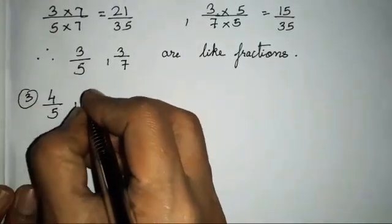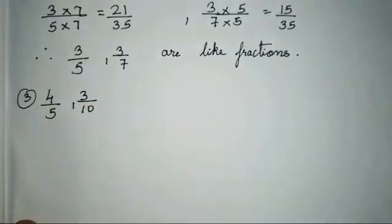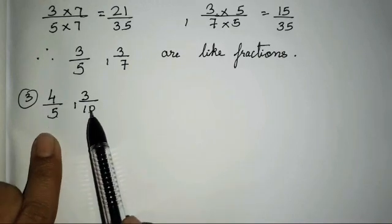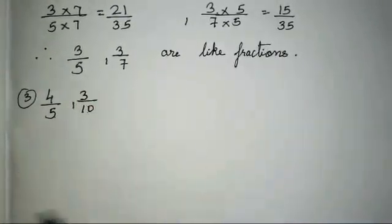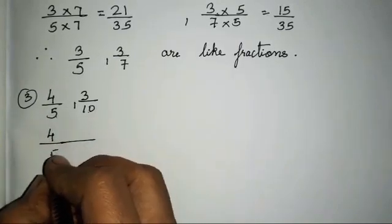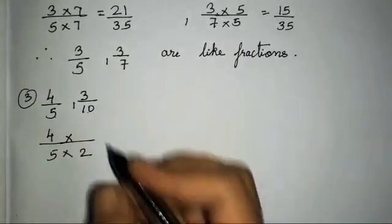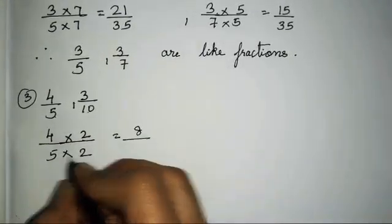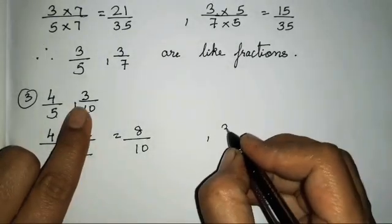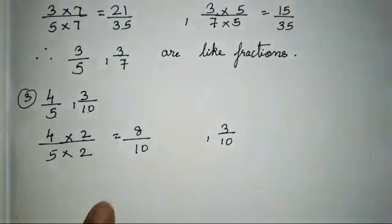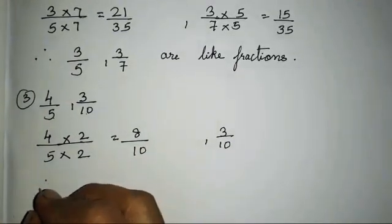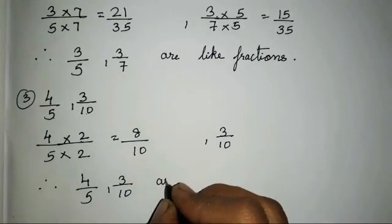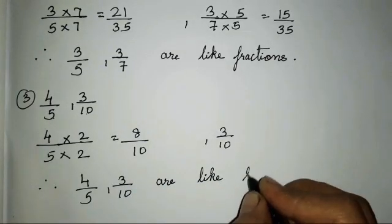The third sum is 4 upon 5 and 3 upon 10. In the 5s table, 10 comes — 5 twos are 10. So we will keep 3 upon 10 as it is and only change one fraction by multiplying it with 2: 4 twos are 8, 5 twos are 10. And 3 upon 10 was already there. We have got the same denominators, therefore 4 upon 5 and 3 upon 10 are like fractions.